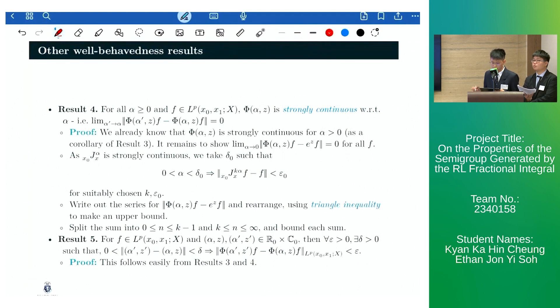Our next result states that phi is strongly continuous with respect to alpha. And this follows because we already know that phi is strongly continuous with respect to alpha for alpha being greater than zero. And this is because of result three. Hence, it suffices to show that this limit is true for all functions.